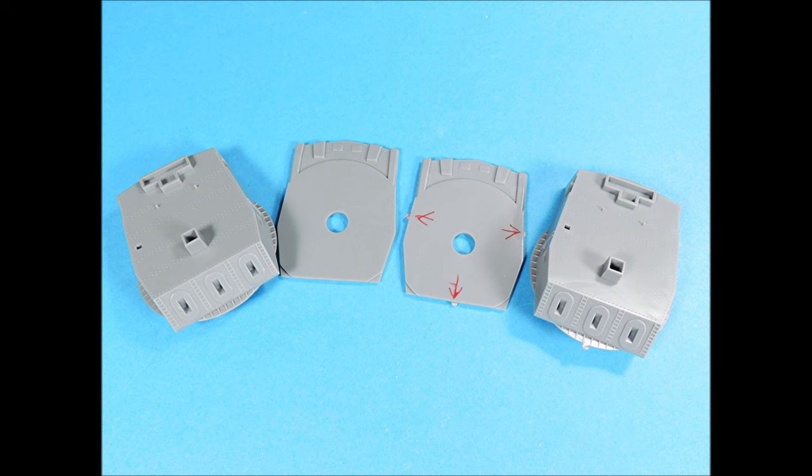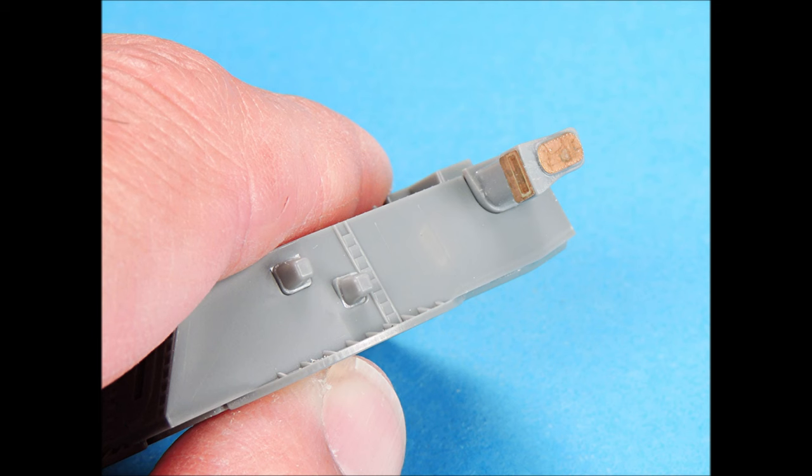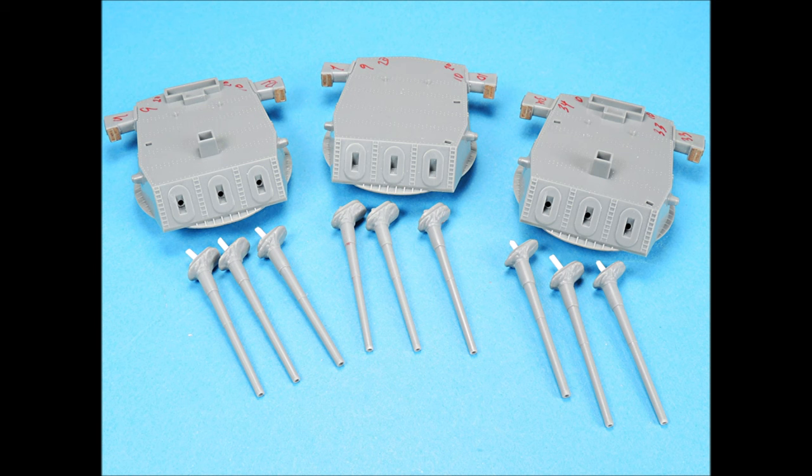The turrets were cleaned up, and all the remaining tree stubs have been removed and carefully sanded smooth. Eduard photo-etch details were added to the optical range finders. Some of the barrels had their back ends modified so that the individual barrels could be positioned at different elevations. The rod was added to the back side of each barrel, and corresponding holes drilled into the turrets for positioning.